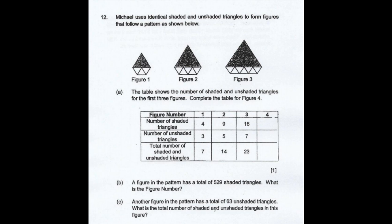Michael uses identical shaded and unshaded triangles to form figures that follow a pattern as shown below. So figure 1, 2, 3 is given. The table shows the number of shaded and unshaded triangles for the first three figures. Complete the table for figure 4.